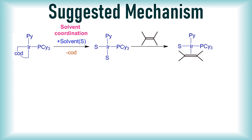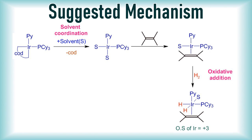The next step involves coordination of the substrate olefinic molecule with the central iridium ion. It is followed by the oxidative addition of dihydrogen. This involves the cleavage of the H-H bond in molecular hydrogen and coordination of two hydrogen atoms with the iridium ion. In this step, the unipositive iridium ion is oxidized to the plus three oxidation state — hence the name oxidative addition.